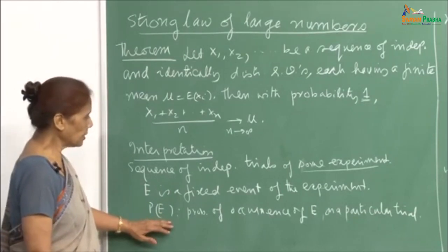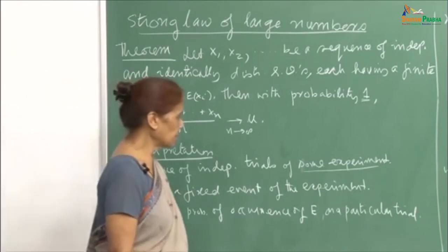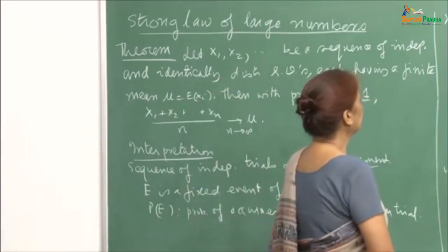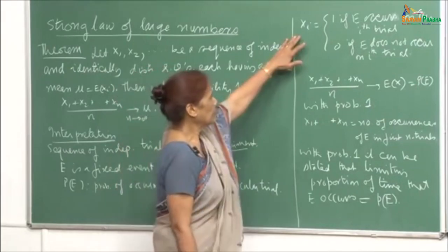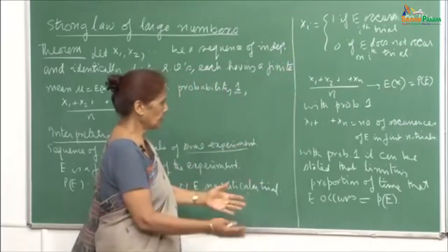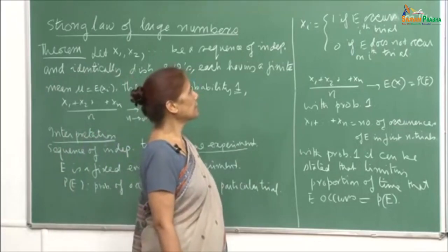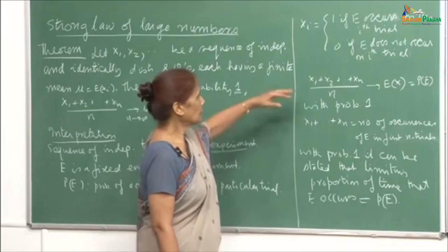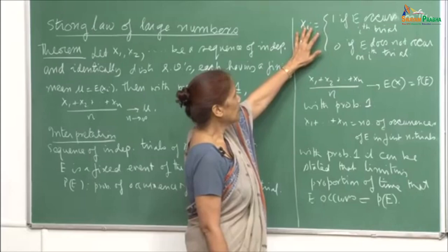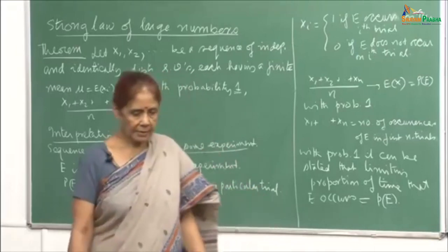Let p(E) denote the probability of the occurrence of E on a particular trial. Define x_i as 1 if E occurs on the i-th trial. So I am defining an indicator variable to show how we can interpret the strong law of large numbers. x_i is 1 if E occurs on the i-th trial, and 0 if E does not occur on the i-th trial.